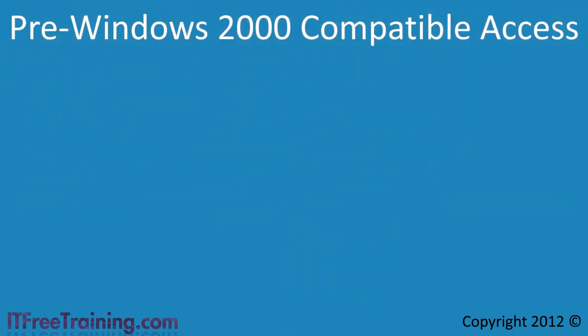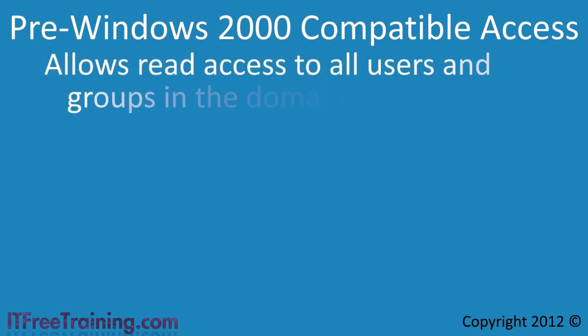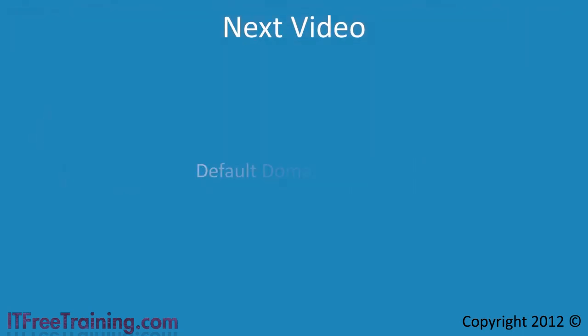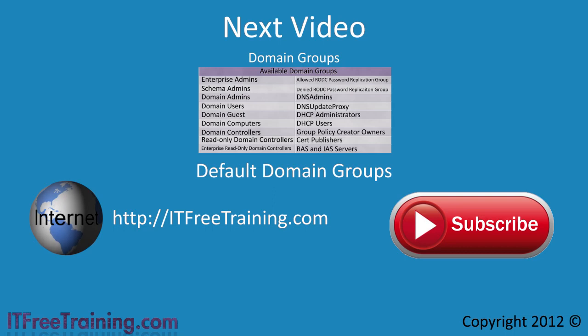The last group is Pre-Windows 2000 Compatibility Access. This group allows read access to all users and groups in the domain and should only be used if you have Windows NT computers in your domain. That covers the built-in groups for a domain controller and the local groups on Windows Server 2008 R2. In the next video I will look at the domain groups that are created in Active Directory — these groups provide the backbone for access in your domain and provide access at the domain level. Thanks for watching another free video from ITFreeTraining.